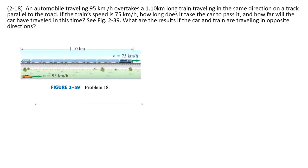In this problem, it tells us there is a car that travels at a velocity of 95 km per hour, and it wants to overtake a train. This train travels at a velocity of 75 km per hour, and it also tells us the length for this train. The car and the train move in the same direction. It asks you how long does it take the car to pass, and how far will the car have traveled in this time.